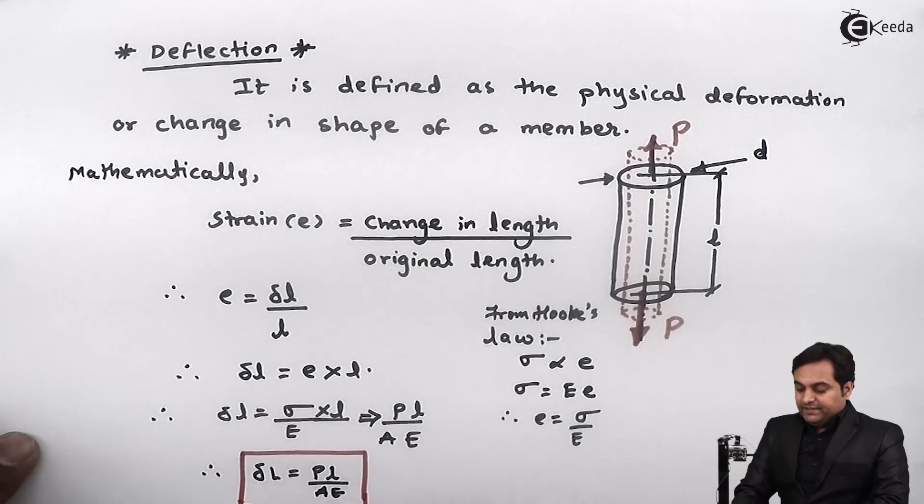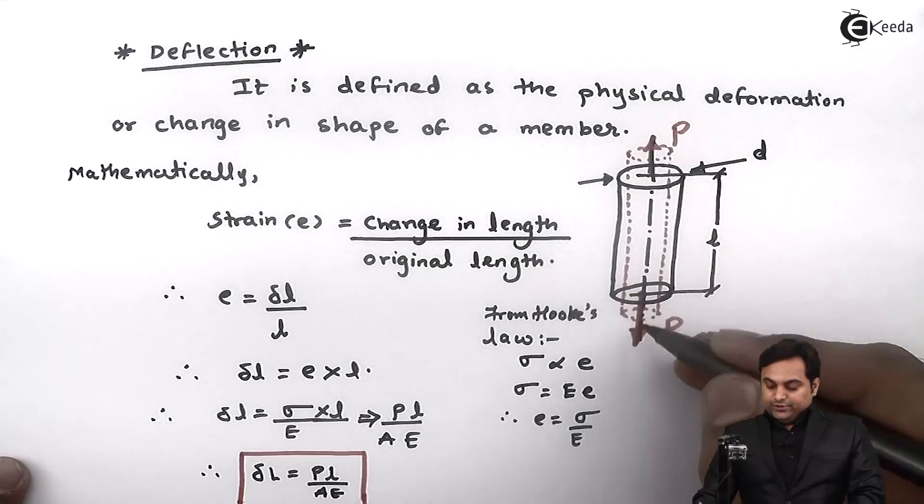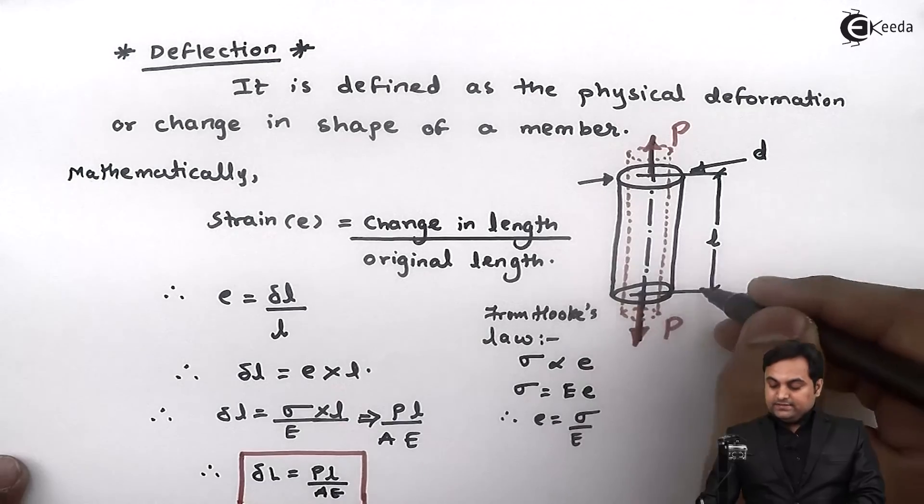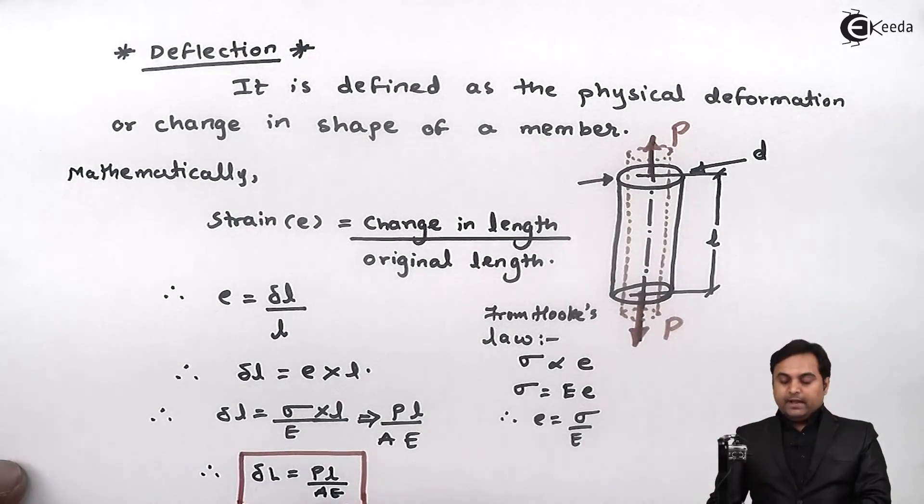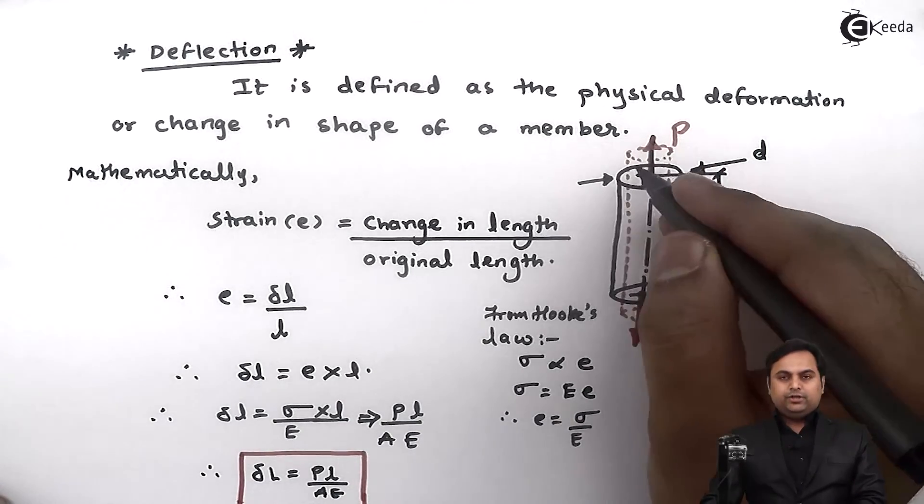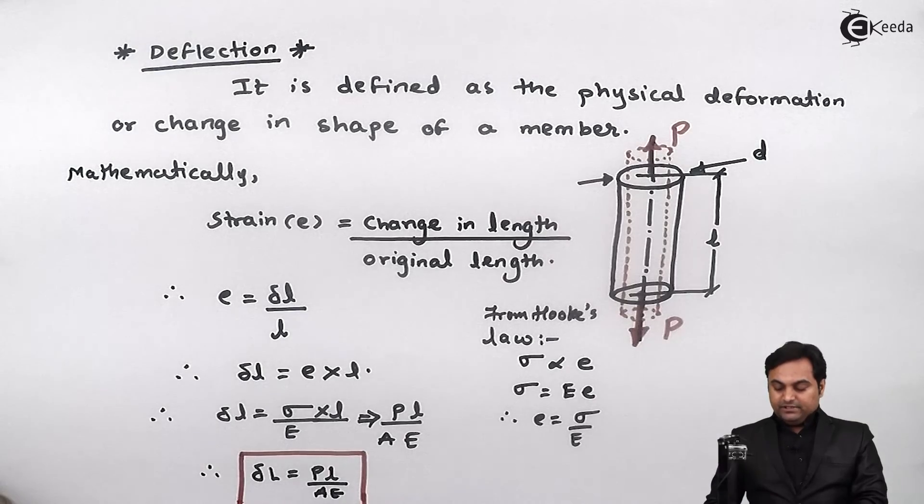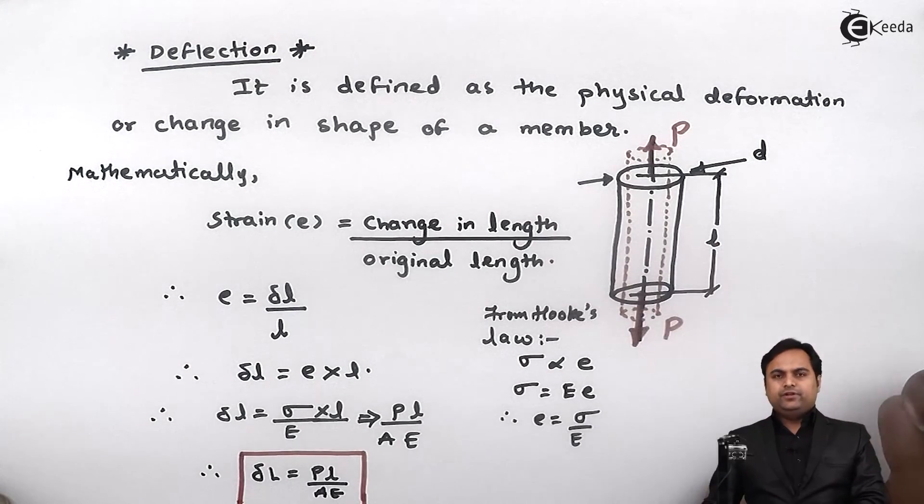This is the formula of deflection. Here P indicates the load which is acting on the member, l is the length of the member, capital A is the cross section area of this member, and capital E is the Young's modulus for the given material of this member.